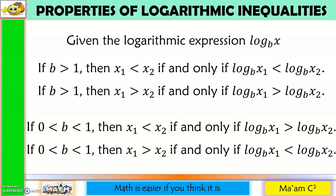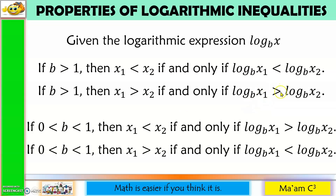Here are the properties of logarithmic inequalities. Given the logarithmic expression — the logarithm of x to the base b — if b is greater than 1, then x₁ is less than x₂ if and only if the logarithm of x₁ to the base b is less than the logarithm of x₂ to the base b. It follows that x₁ is greater than x₂ if and only if the logarithm of x₁ to the base b is greater than the logarithm of x₂ to the base b.